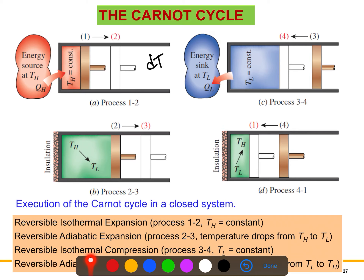So it will become TH again. The temperature difference between the gas and the energy source will never exceed that limit dT, and it will remain constant at TH. When it decreases a little bit dT, the energy source will transfer the heat back. This means it is a reversible process, and the process will continue until the cylinder reaches state two. At the end, the temperature is constant at TH, and the heat transfer here is QH.